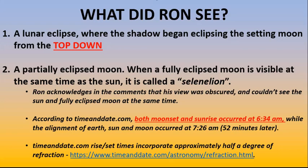Secondly, he saw a partially eclipsed moon. When you see a fully eclipsed moon at the same time as the sun peaks over the horizon, it's called a selenelion. Geometrically it should be impossible, but due to refraction it is possible. Ron acknowledges in the comments that his view was obscured, so he couldn't quite see the sun and the fully eclipsed moon at the same time. So not a true selenelion.